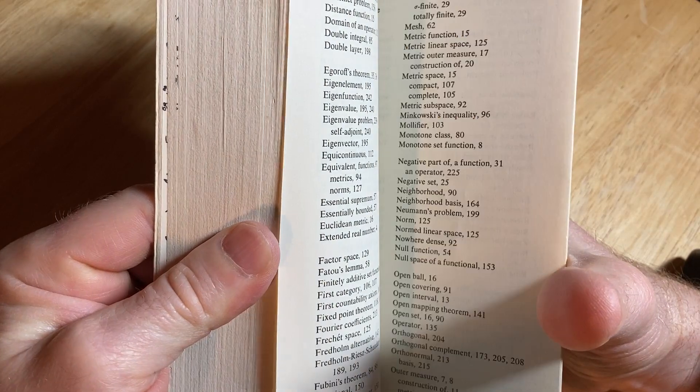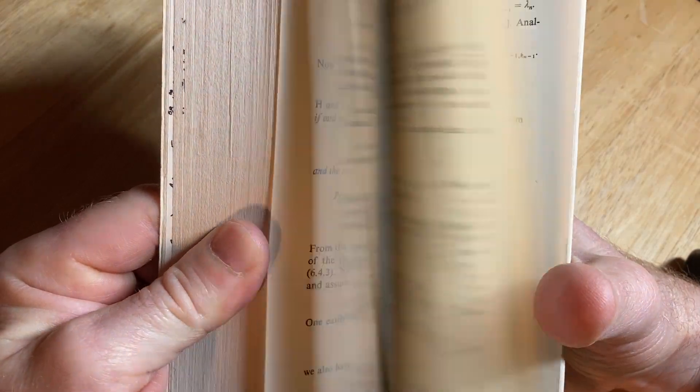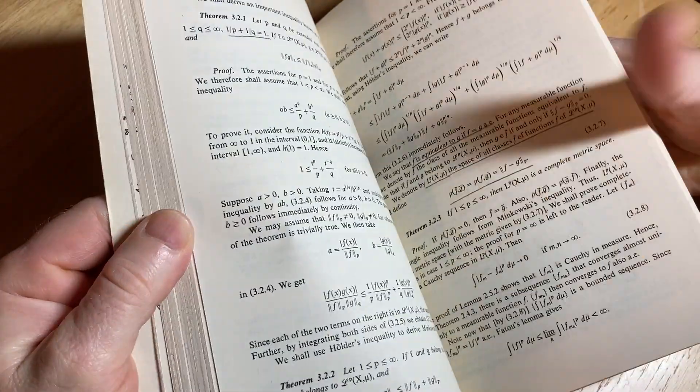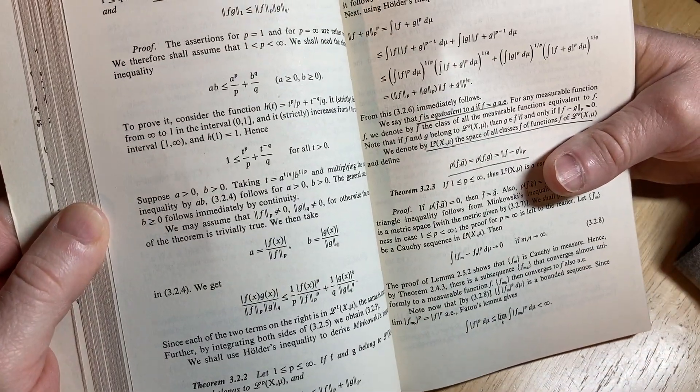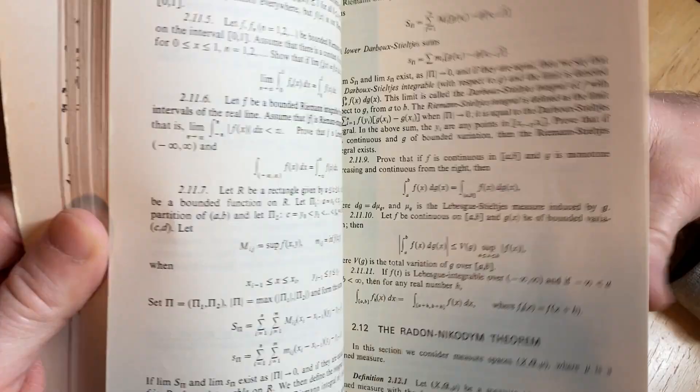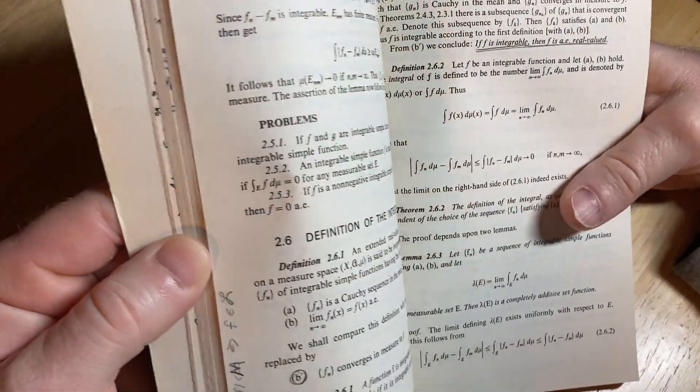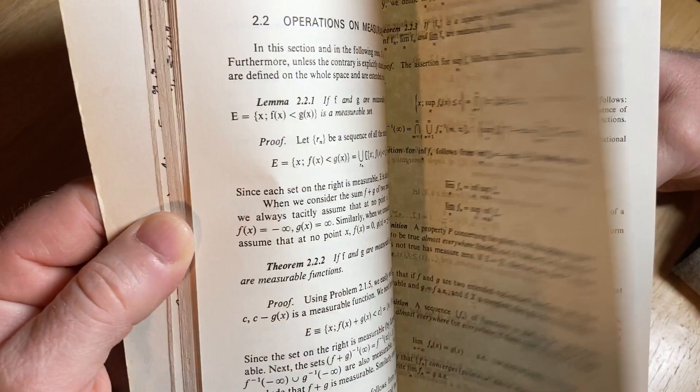This is a book that you can use to learn measure theory, right? So it's a good resource. And it's a Dover book. So that means it's affordable. So I think that's the biggest things about this book. Is it the best book on measure theory and analysis? I don't know. It's a book. It's a textbook. It's hard.